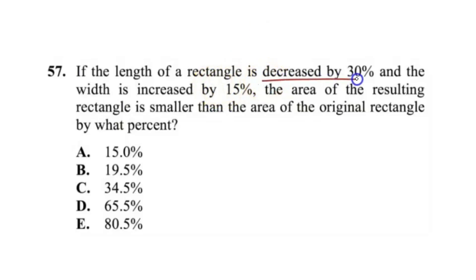The length of a rectangle is decreased by 30% and the width is increased by 15%. The area of the resulting rectangle is smaller than the area of the original rectangle by what percent? This one's pretty easy because we know the length decreased by 30%, so that can be represented as 0.7 multiplied by that length.